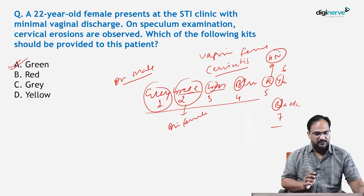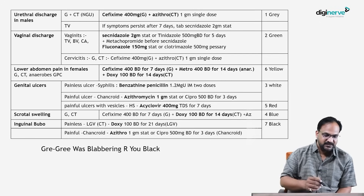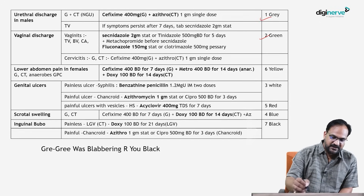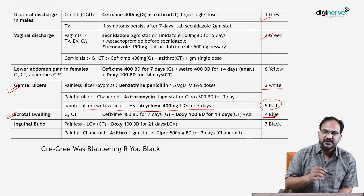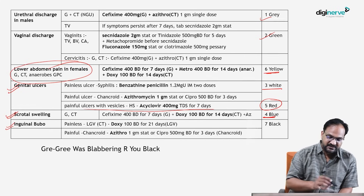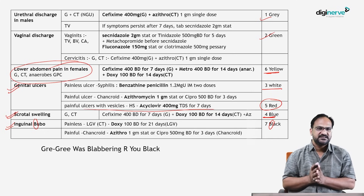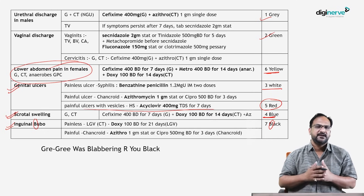To summarize additional kit usage in STI/RTI management: genital ulcer (male or female) → Kit 3; scrotal swelling → Kit 4; HSV (herpes simplex virus) → Red Kit (Kit 5); PID or lower abdominal pain → Yellow Kit (Kit 6); inguinal bubo → Black Kit (Kit 7). Try to remember these with both the mnemonic trick and understanding. That concludes the previous year questions of community medicine from NEET PG 2023. Thank you.